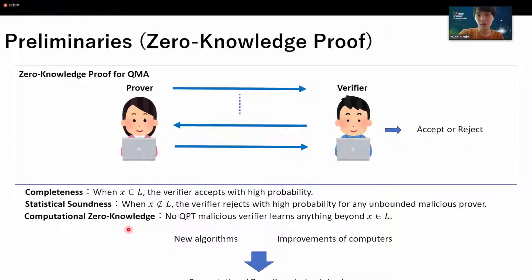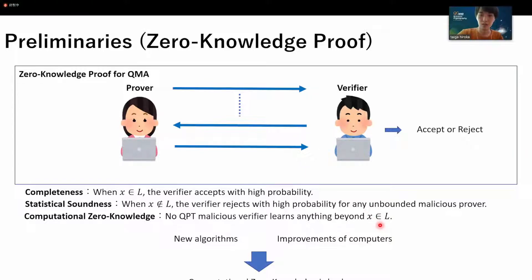In other words, in computational zero-knowledge, a malicious verifier may obtain information beyond the fact that the instance X is the YES instance in the future. So this is undesirable.